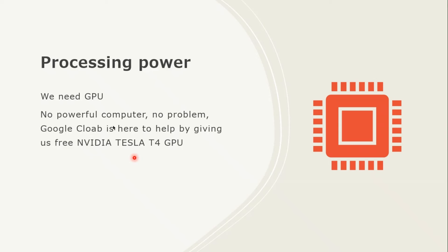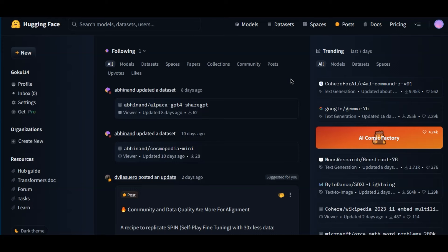For fine tuning we need processing power, which comes from a GPU — a graphical processing unit. It's what most companies use to pre-train or fine tune models. If you have a low-end computer without a powerful GPU, no problem — Google Colab, a service from Google, gives us a free NVIDIA Tesla T4 GPU. We are going to use Hugging Face Hub to select our models and datasets, so first sign up or log in to your Hugging Face account and go to the Models tab.